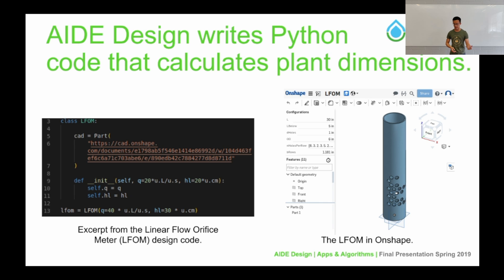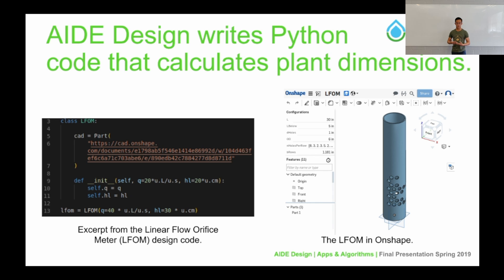For example, here's the Python class and Onshape model for the LFOM — the linear flow orifice meter. In the Python class, we store the URL that links to the Onshape model that you can see on your right. When a user wants to create and redesign a new LFOM, they simply run the bottom line of code, which creates a new LFOM for a given flow rate. This runs calculations for different parameters of the LFOM, such as the height and number of orifices, and then changes the Onshape model online.